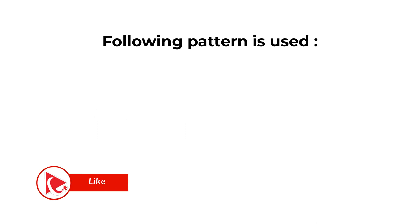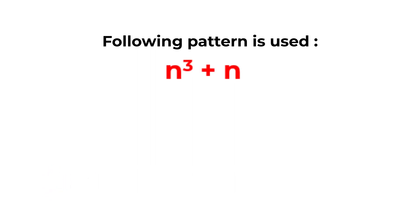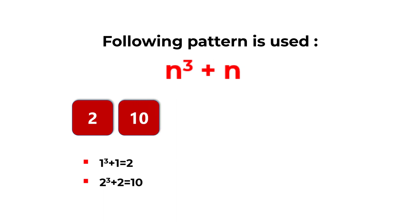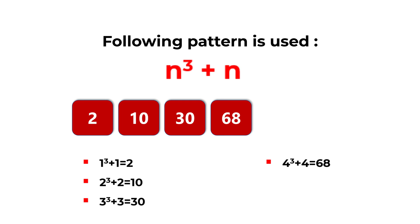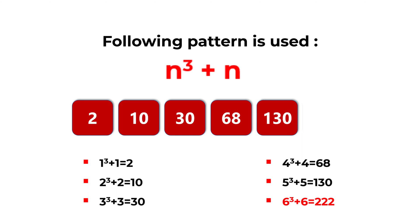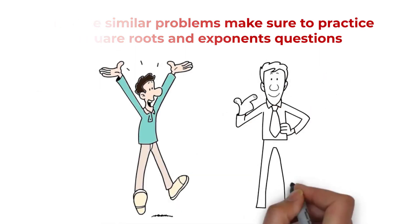Always look for patterns. To determine the answer, use the pattern n³ + n. The first number equals 1³ + 1 = 2. The next is 2³ + 2 = 10. Then 3³ + 3 = 30, then 4³ + 4 = 68, then 5³ + 5 = 130. The missing number is 6³ + 6 = 222. So the correct answer is choice D: 222.